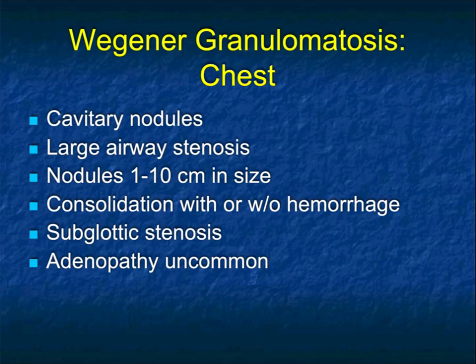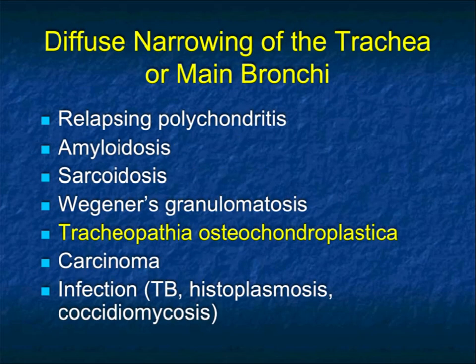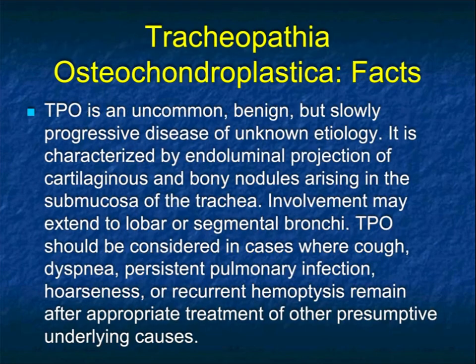In terms of presentations: cavitary nodules can look like metastatic disease; large airway stenosis as in this case. The nodules can vary from 1 centimeter to 10 centimeters. You can have consolidation with or without hemorrhage, and subglottic stenosis. Adenopathy is uncommon, which would make you think of Wegener's rather than malignancy. When you talk about diffuse narrowing of the trachea and main stem bronchi, the differential includes relapsing polychondritis, amyloid, sarcoid, Wegener's, carcinoma, infection, and tracheopathia osteochondroplastica.